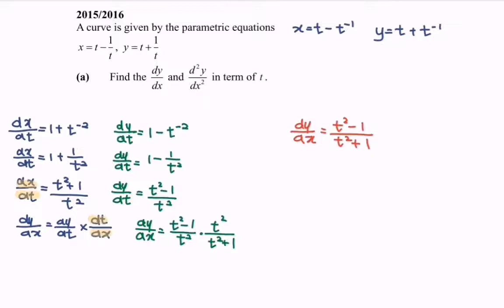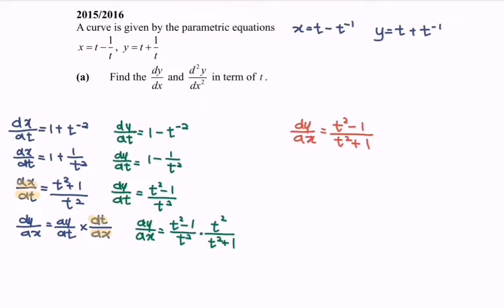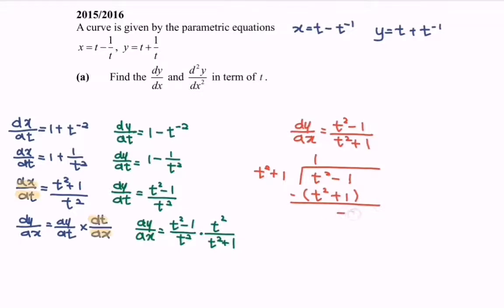Referring to the degree of the fraction, we notice that it is an improper fraction. Using long division to simplify: t squared minus 1 divided by t squared plus 1 gives 1. So t squared plus 1 times 1 leaves a remainder of negative 2. Rewriting, dy/dx is equal to 1 minus 2 over t squared plus 1.